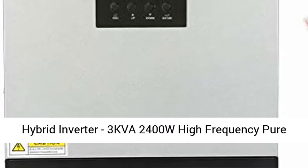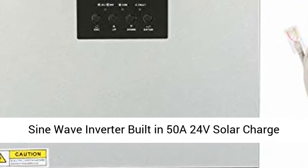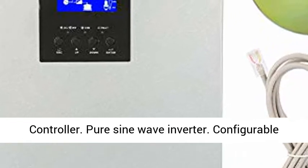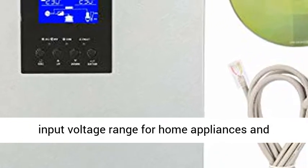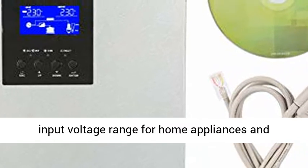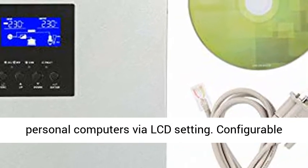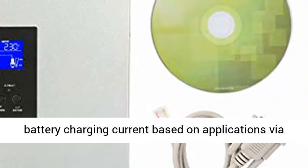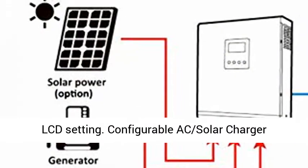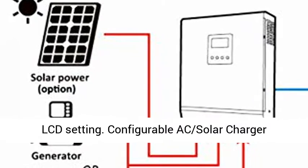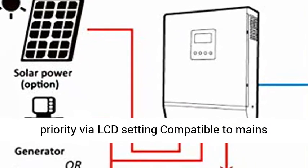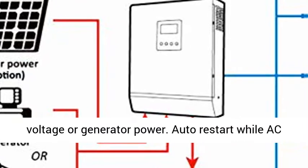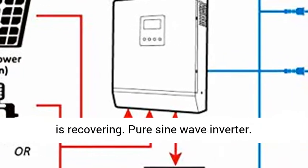Hybrid Inverter 3KVA 2400W High Frequency Pure Sine Wave Inverter with built-in 50A 24V Solar Charge Controller. Configurable input voltage range for home appliances and personal computers via LCD setting. Configurable battery charging current based on applications via LCD setting. Configurable AC/Solar charger priority via LCD setting. Compatible to mains voltage or generator power, auto restart while AC is recovering.